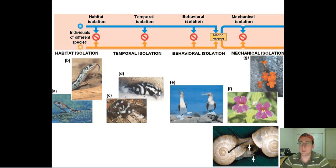In the last video we talked about the fact that reproductive isolation is crucial for the process of evolution. In this video we're going to focus on the two main types of reproductive isolation that actually lead to speciation. The first is what we call pre-mating or pre-zygotic isolation, and these are types of isolation which will prevent reproduction in the first place.